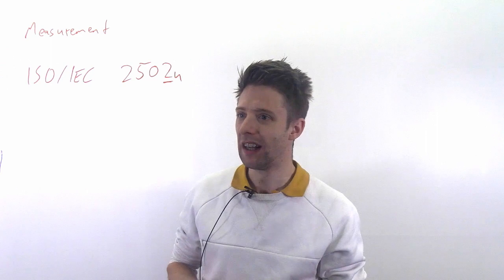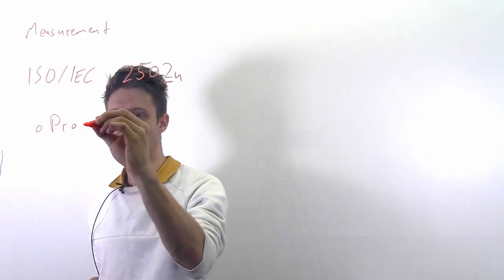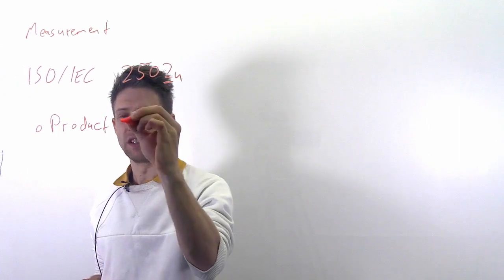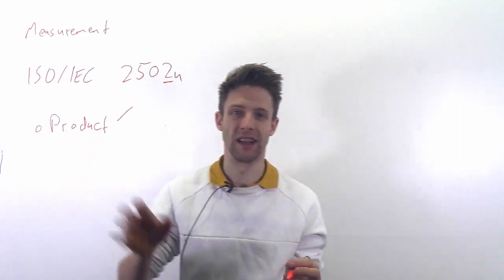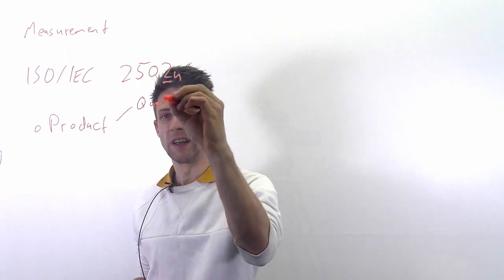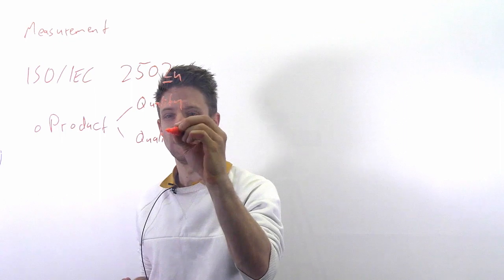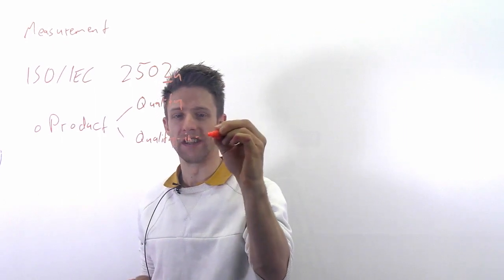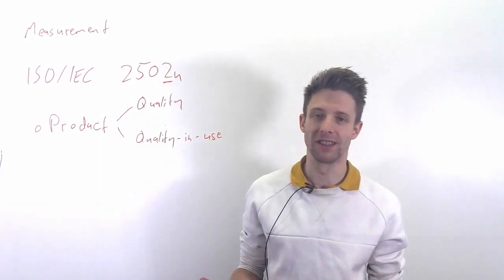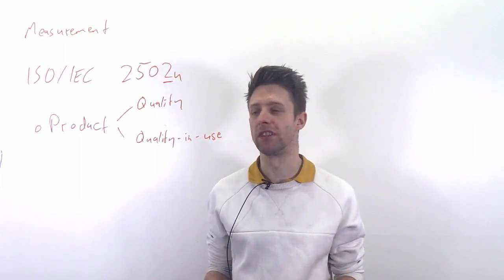Now in general, what we can measure is of course our product, our system, and the standard talks about software and systems quality or product quality, and it talks about the so-called quality in use which is different. So this is sort of static properties of the software, of the code - how secure is it, how maintainable is it, for example, how performant is it.